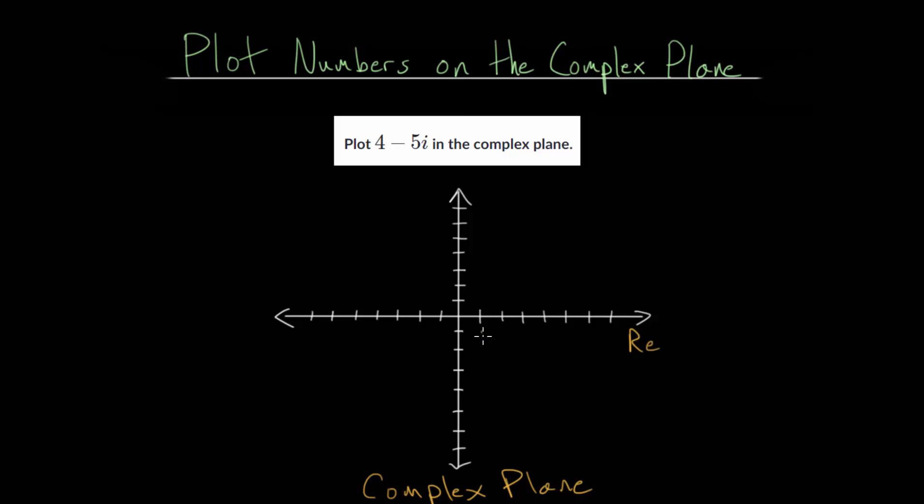we have our normal numbers, or we call this the real axis, which we usually abbreviate as RE. These are just the normal numbers: 1, 2, 3, 4, 5, and so on. And we have the negatives to the left: minus 1, minus 2, minus 3, and so on.